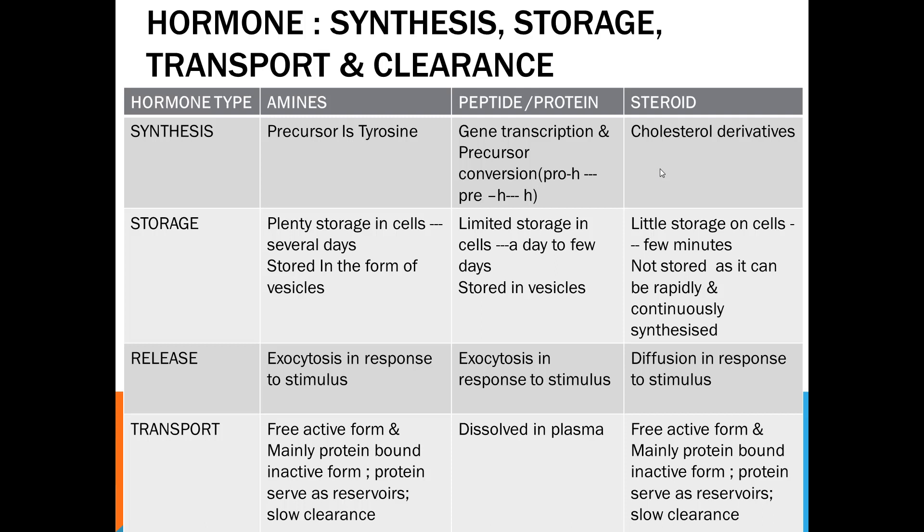Hormone synthesis, storage, and transport: we are taking these chemicals in three categories—amines, peptides, and steroids. Amines synthesis, as we have just discussed, is from tyrosine amino acid. They can be stored in large amounts in the cell for several days in the form of vesicles. Release is by exocytosis in response to stimulus, as we have seen in the neuromuscular junction where stimulus comes in the form of action potential and then acetylcholine or dopamine or epinephrine is released.